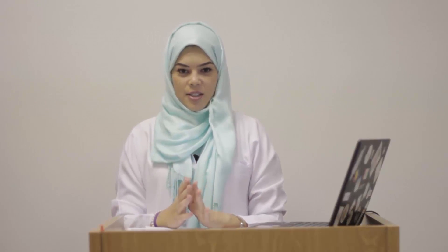An ECG paper is divided into squares. If the paper speed is 25 millimeters per second, then your small square is 1 by 1 millimeters, or equivalent to 0.04 seconds. A large square consists of 5 small squares. 5 times 0.04 is equal to 0.2 seconds.